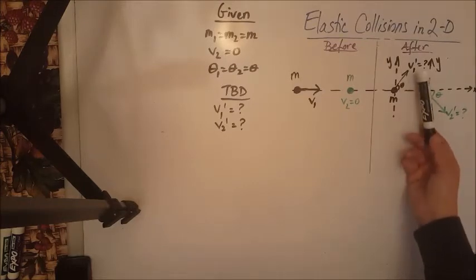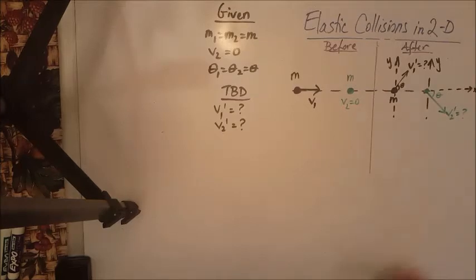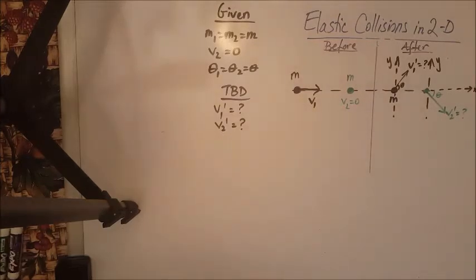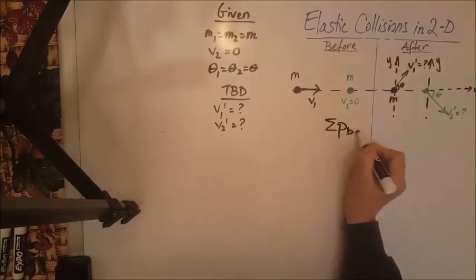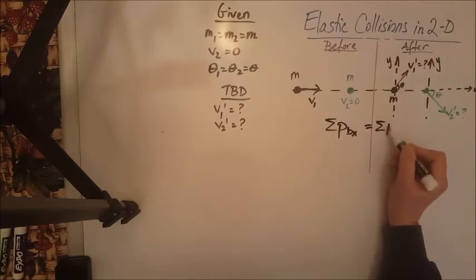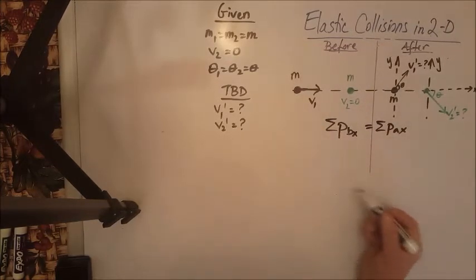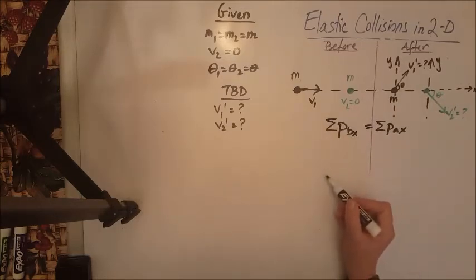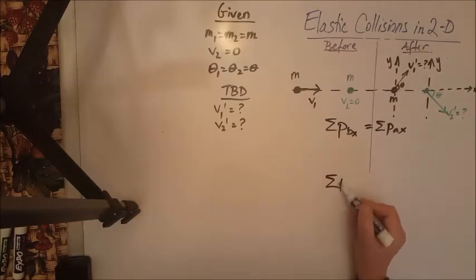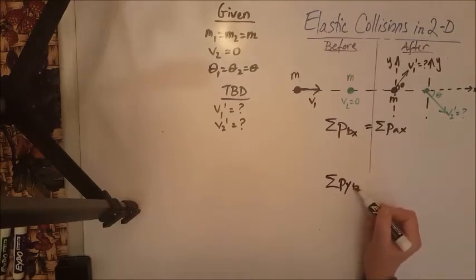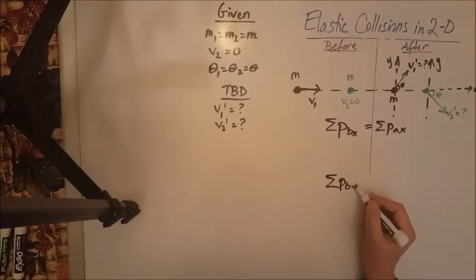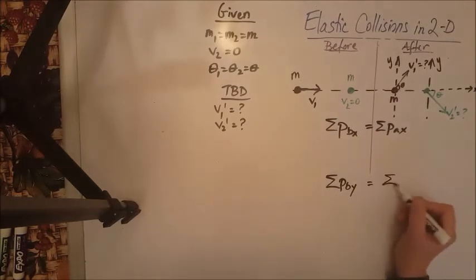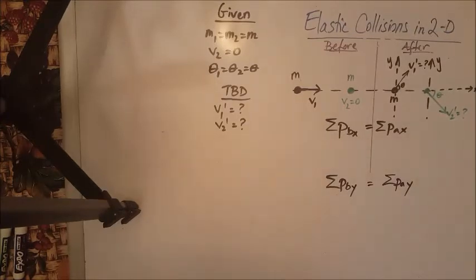So we need to calculate how fast they will be moving after collision. Let's apply the conservation of momentum. The total momentum before on the x equals the total momentum after on the x-axis. Please leave some room to develop this equation further. And the same thing for the y: total momentum on the y before collision equals total momentum after collision on the y.